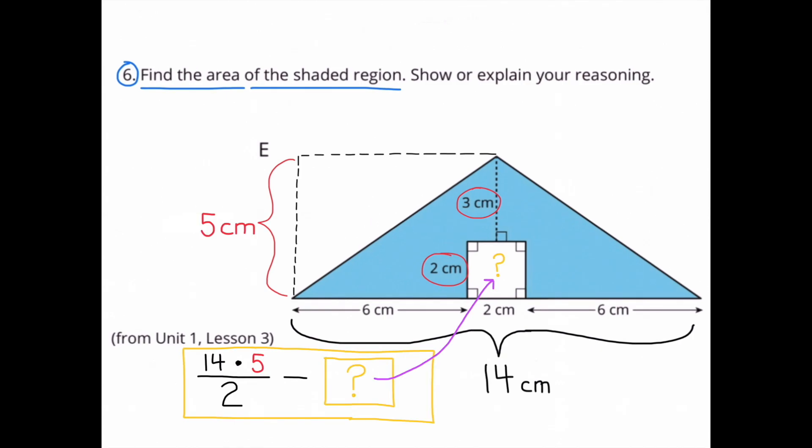Since the shaded region has the shape of a triangle with a square taken out of it, I decided to use the formula for finding the area of a triangle: half of base times height, or base times height divided by 2. So 14 times 5... 14 times 5 is 70, and 70 divided by 2, or half of 70, is 35.